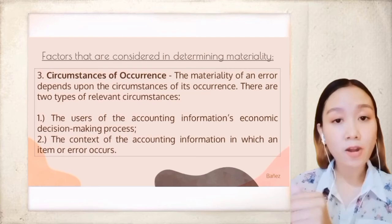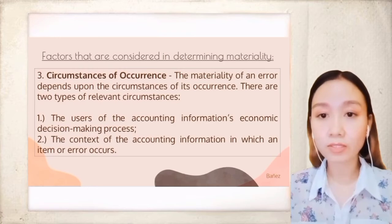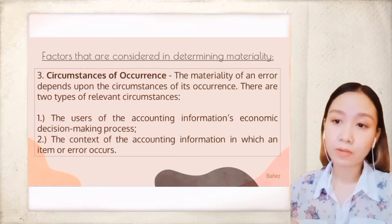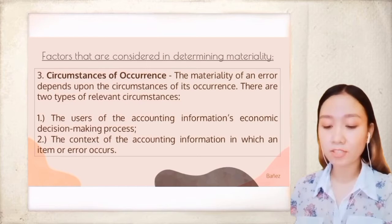If the primary users are investors or potential investors, the auditor can assign a low materiality threshold to income items. The second type of relevant circumstance is the context of the accounting information in which an item or error occurs — for instance, a misstatement may be in the context of comparative figures, financial statements of comparable entities, and management or shareholders' expectations.